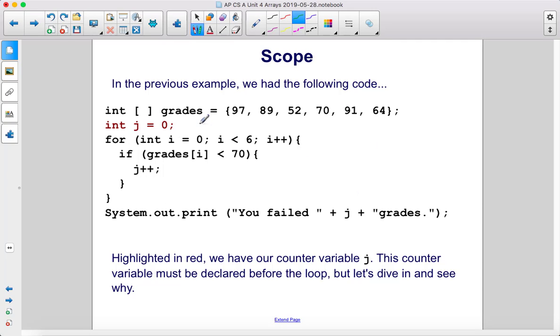Highlighted in red, we have our counter variable j. This counter variable must be declared before the loop, but let's dive in and see why.